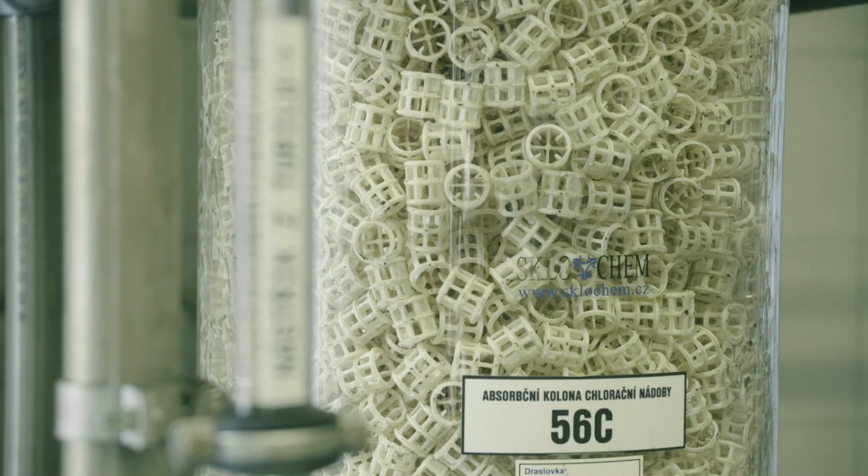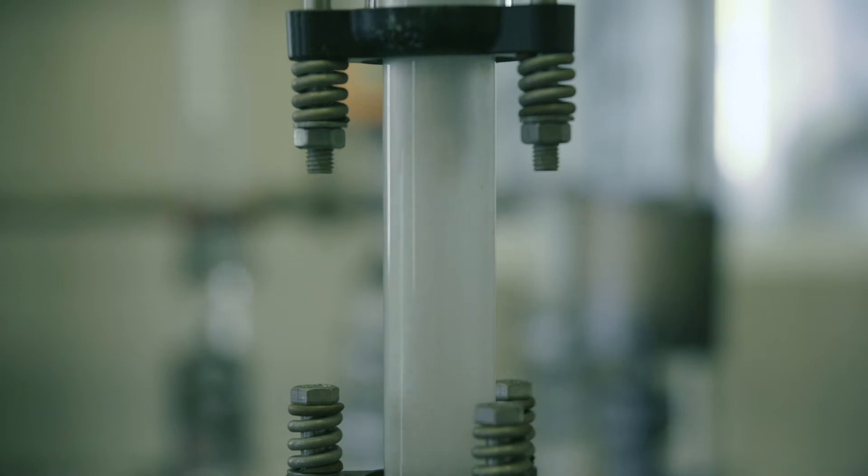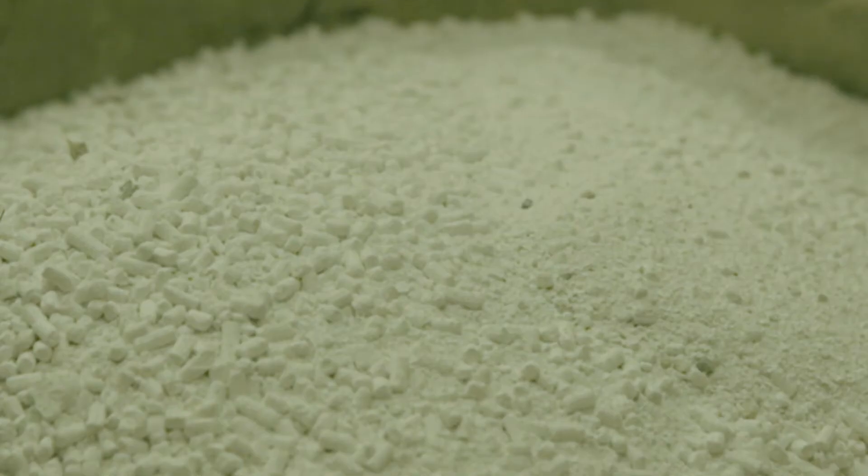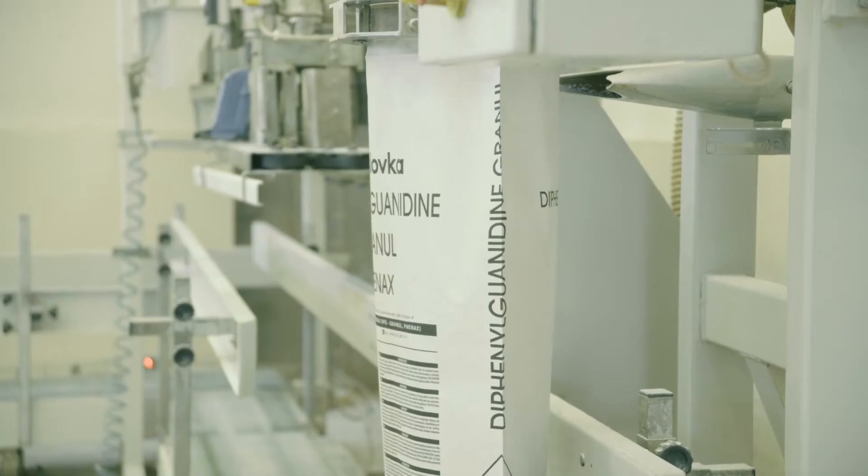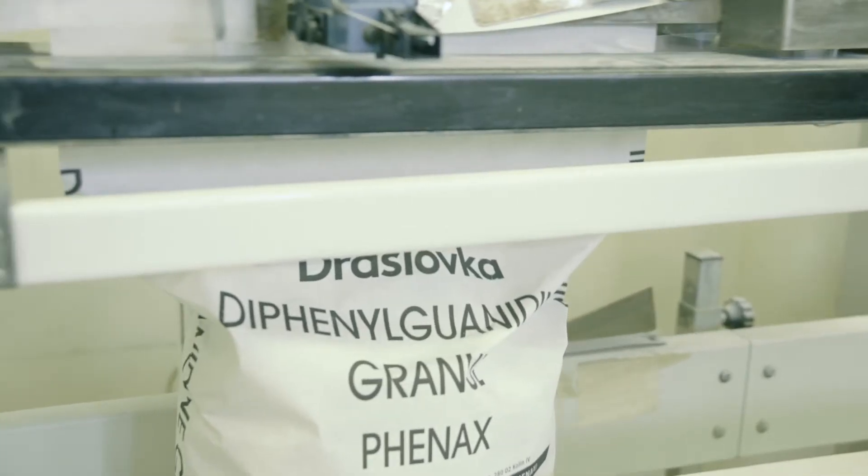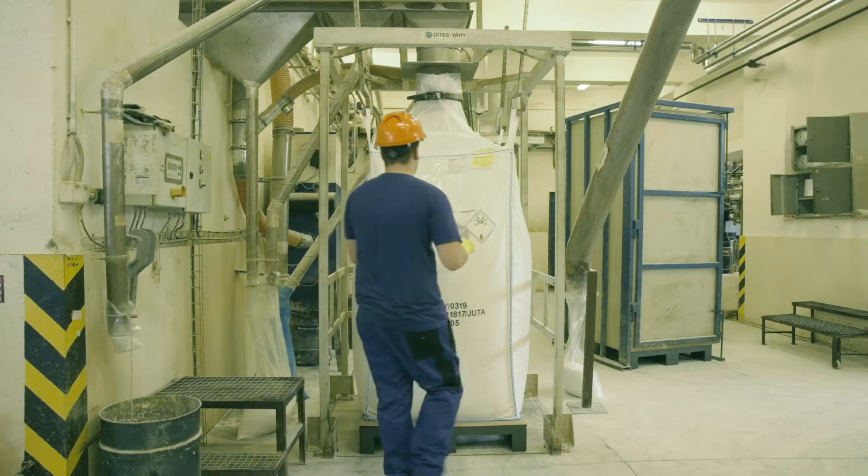DPG is produced as granules or as a powder, at each client's request according to the type of technology used by them. It is packed in paper bags of 15 or 20 kilograms each, and big bags of 600 kilograms.